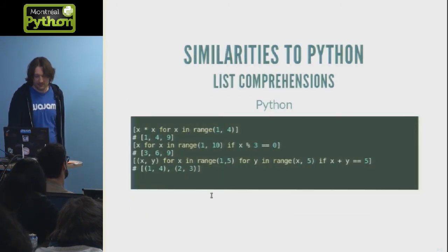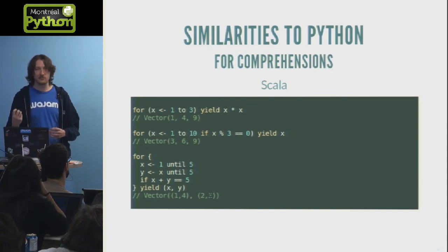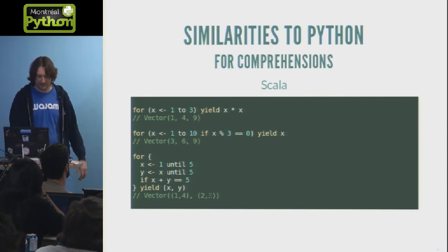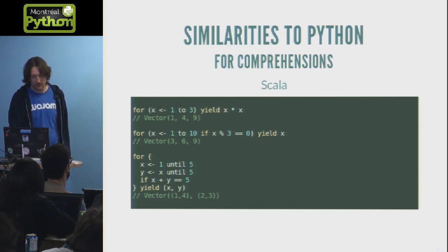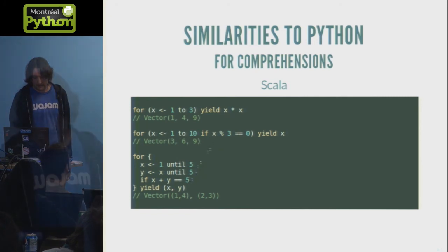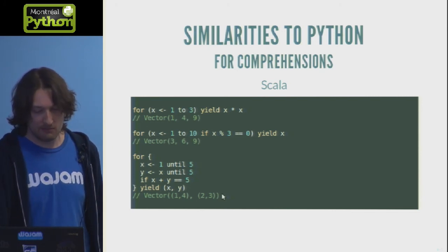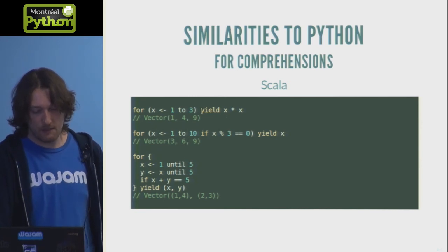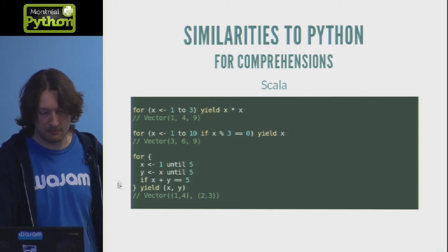Moving on to list comprehensions in Python — in Scala you don't have list comprehensions, you have for comprehensions, which if you go in depth are closer to do-notation in Haskell, but for the sake of this presentation they act just like list comprehensions in Python. In this case, it's a simple comprehension iterating from one to three and yielding the results multiplied by themselves. Here we've got a list of all numbers from one to ten that are multiples of three, and here a list of tuples of numbers between one and five that when added together give five. You can put it on one line or use braces and put them on multiple lines — that's just an implementation detail.